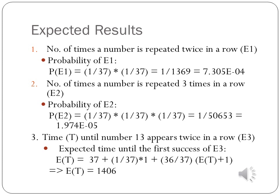Similarly, the expected value of the second event can be calculated. The probability of getting a number three times in a row is 1/37 × 1/37 × 1/37, which equals 0.000019 (×10⁻⁵).